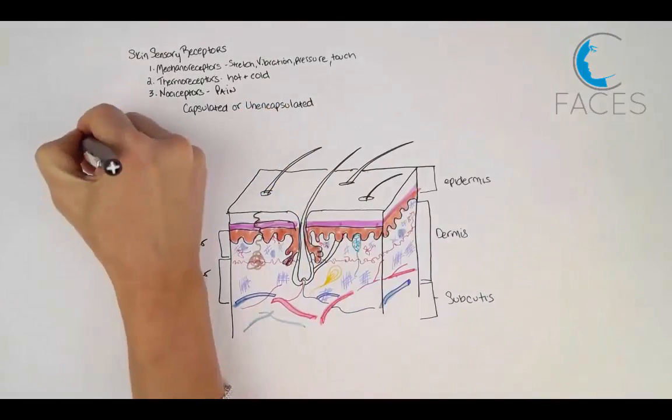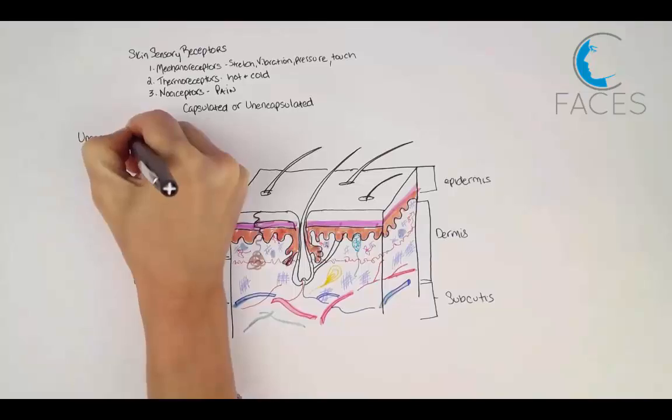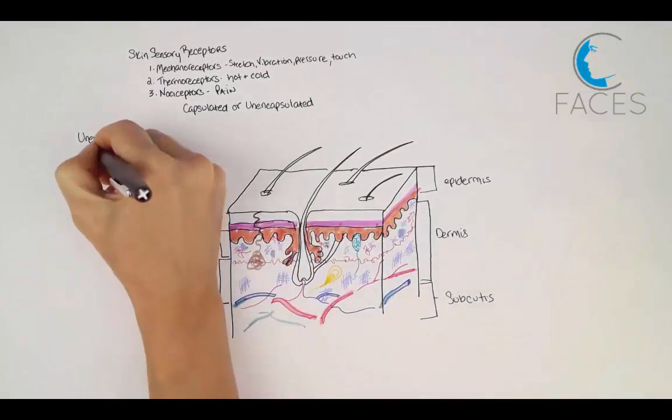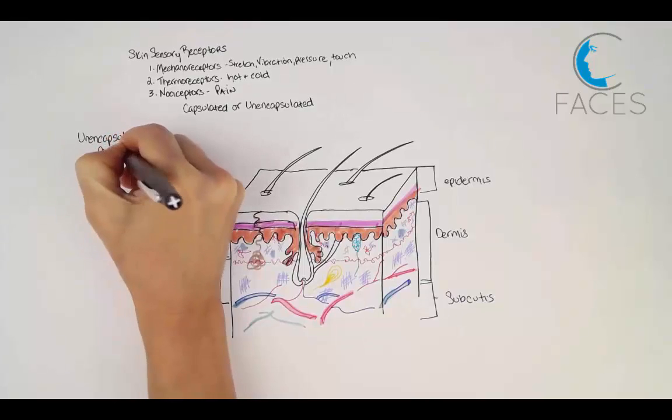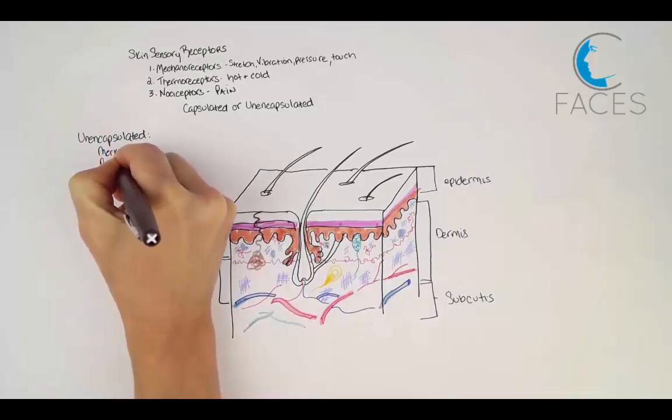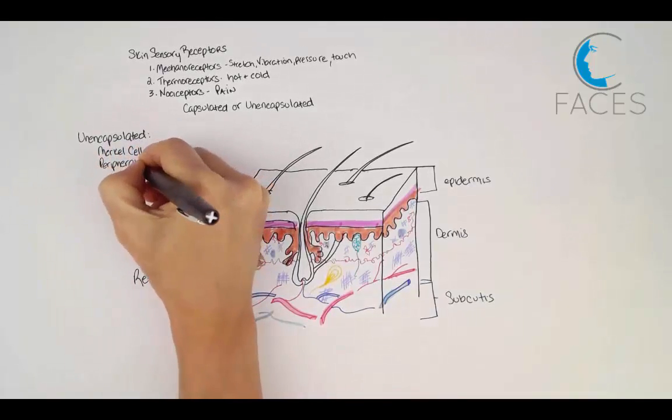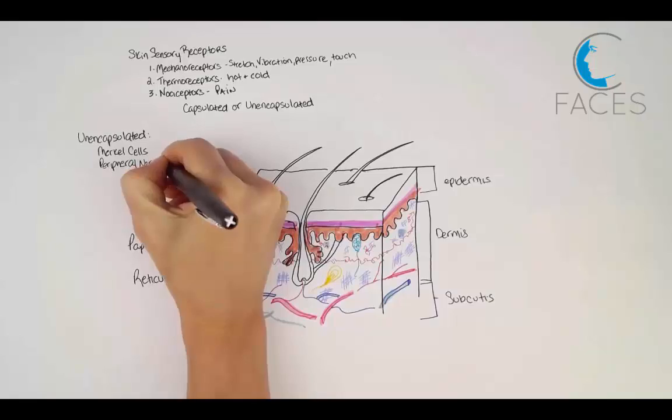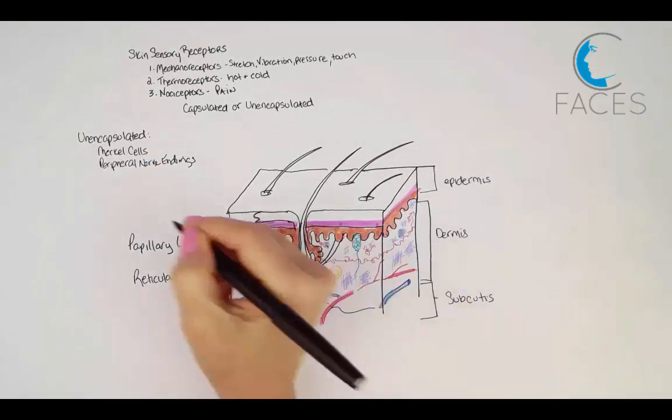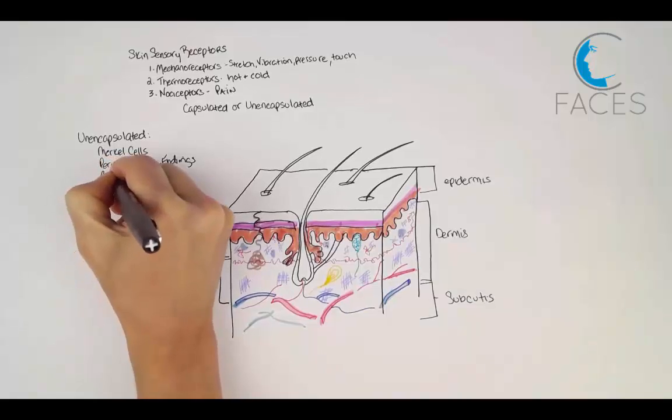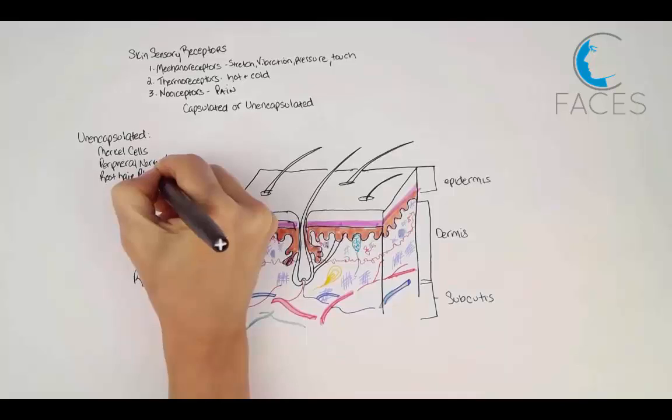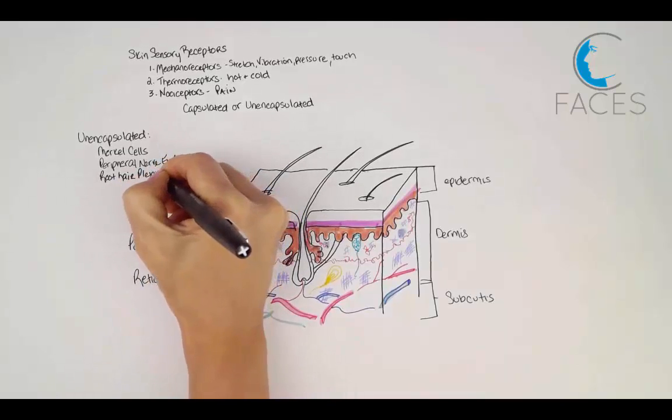Unencapsulated receptors are free nerve endings and include the following. Merkel cells are associated with expanded nerve endings that function as receptors for sustained light touch and for sensing an object's texture. Peripheral nerve endings in the papillary dermis and extending into the lower epidermal layers respond mostly to high and low temperatures, pain, and itching. Peripheral root plexuses, which are a web of sensory fibers surrounding the base of a hair follicle in the reticular dermis, detect movements of the hair.